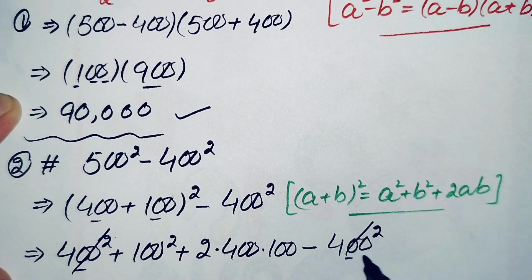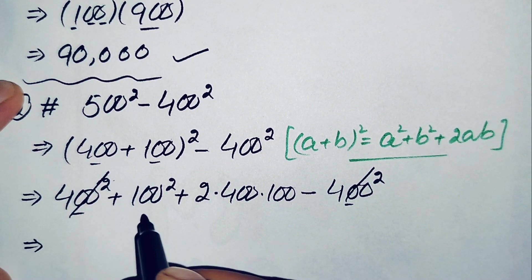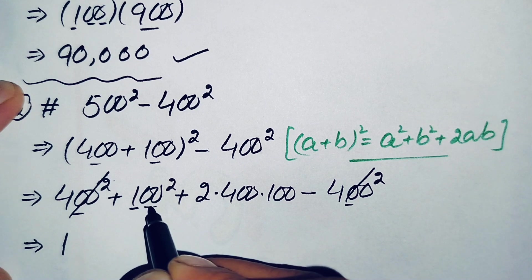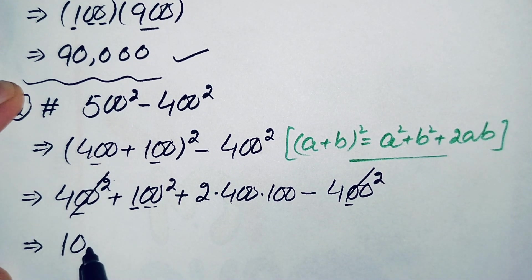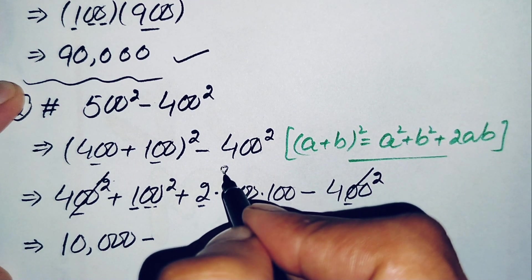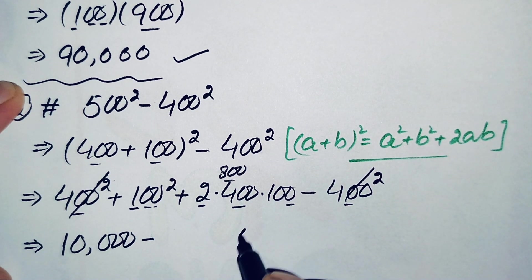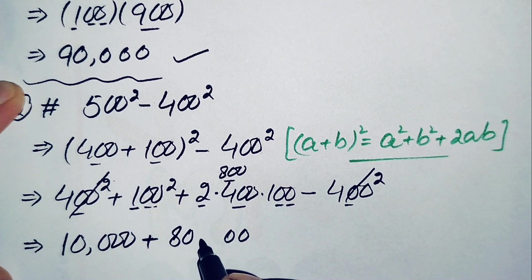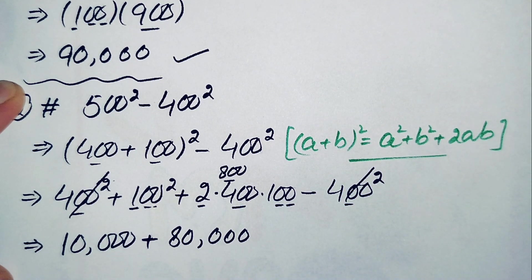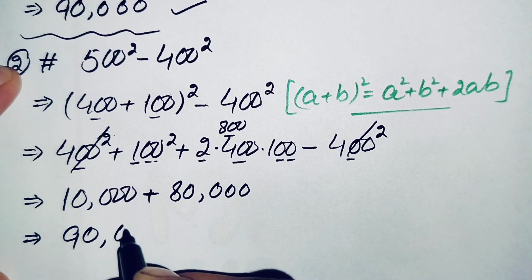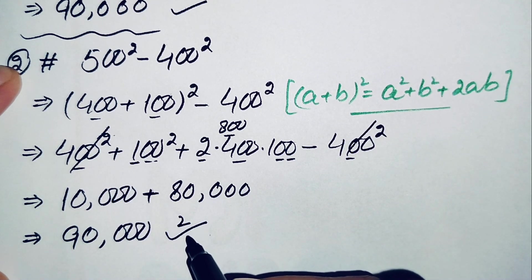The two 400² terms cancel each other out. We are left with 100² plus 2 times 400 times 100. The value of 100² is 10,000. Then 2 times 400 is 800, and 800 times 100 is 80,000. Adding these two: 10,000 plus 80,000 gives 90,000. So 90,000 is our answer using the second method.